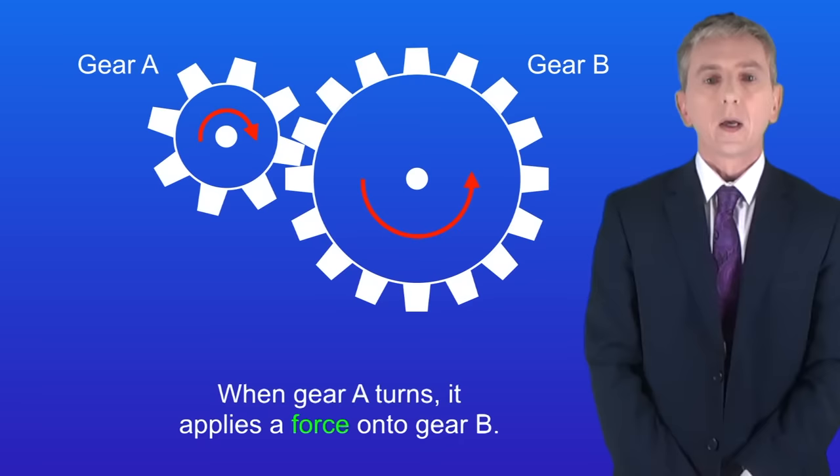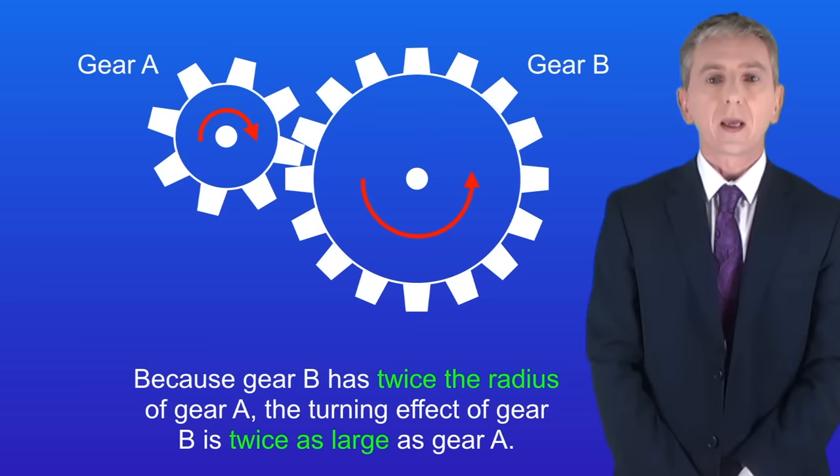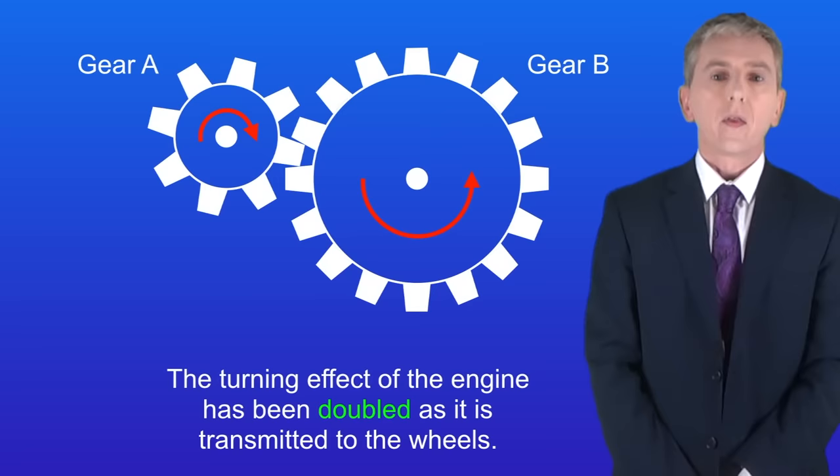You'll notice that gear B has twice the radius of gear A. When gear A turns it applies a force onto gear B. The turning effect depends on the distance between the edge of the gear and the centre. Because gear B has twice the radius of gear A, the turning effect of gear B is twice as large as gear A.